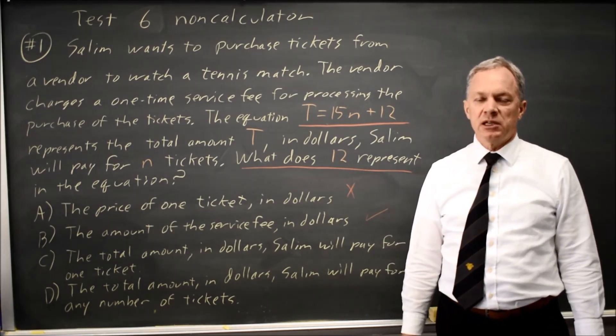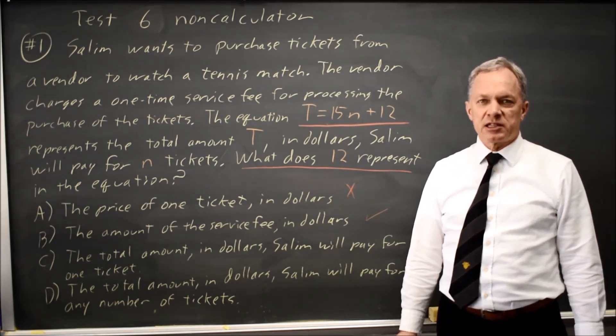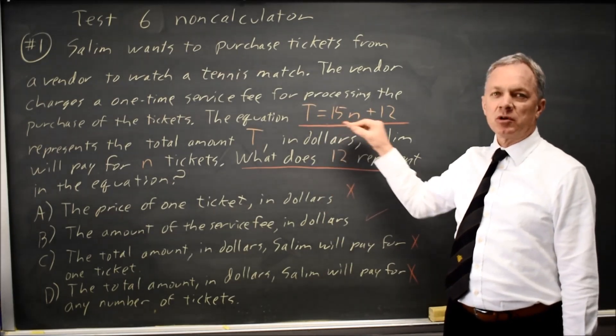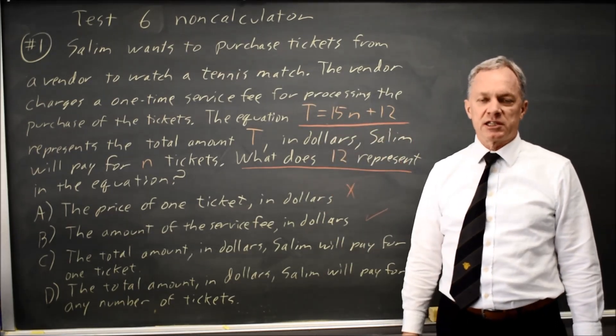The correct choice here would be B. The College Board will ask this typically a couple times on each SAT where they're asking for either the slope or the intercept or both in context.